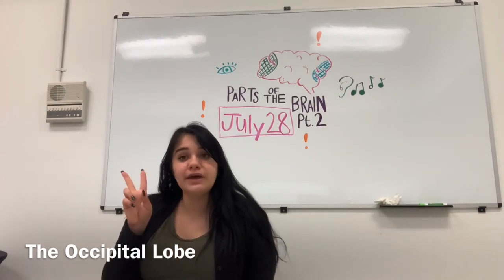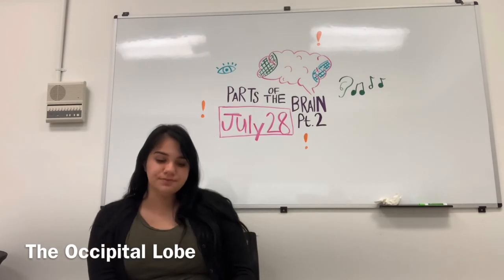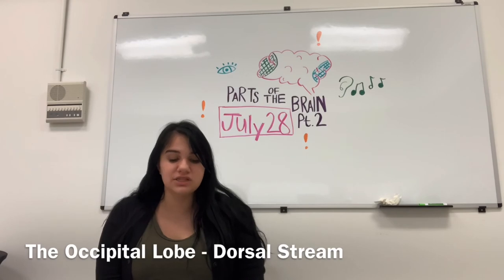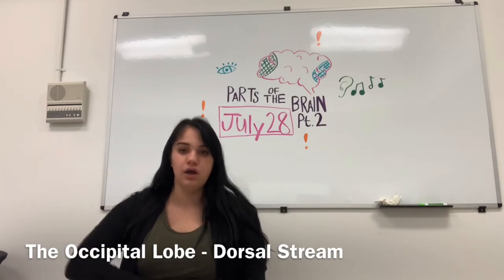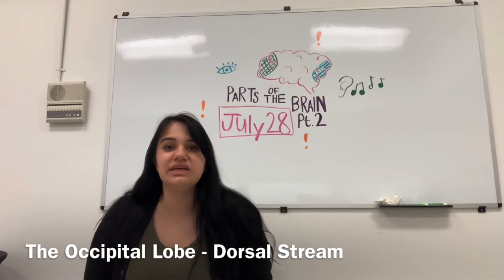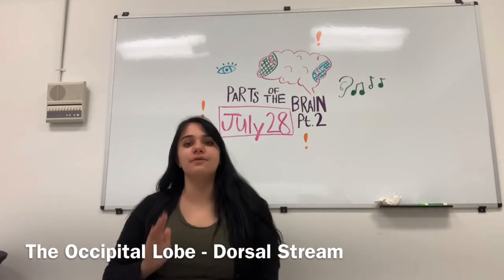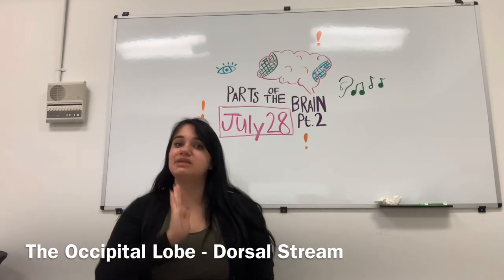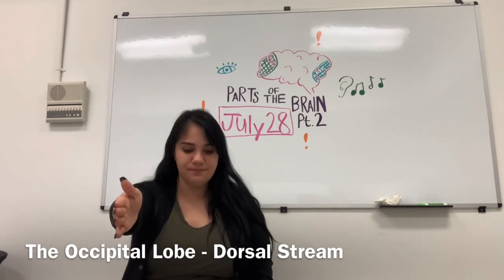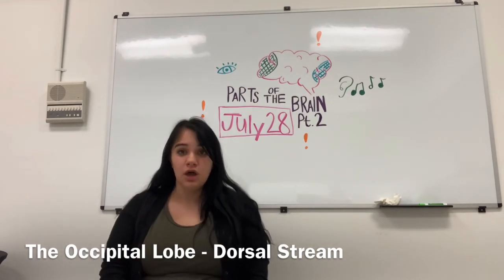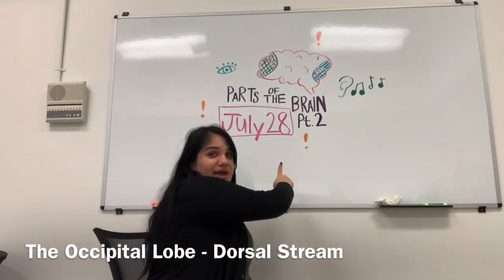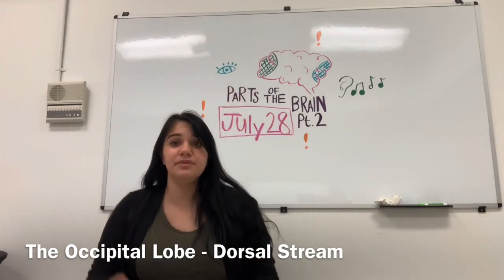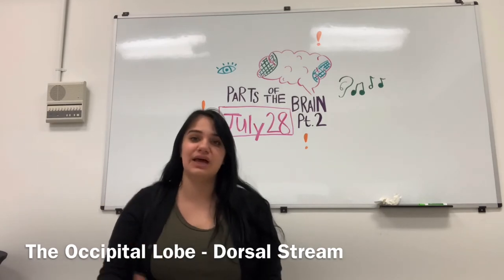There are two major parts of the occipital lobe. The first is called the dorsal stream, which helps us understand where or how things are. For example, I can see that the camera is five feet away from me — my dorsal stream is allowing me to understand perception and distance between myself and another object. It also helps me comprehend colors; I can see that this is pink and it is below my purple writing. The dorsal stream lets us understand where things are and how they appear.